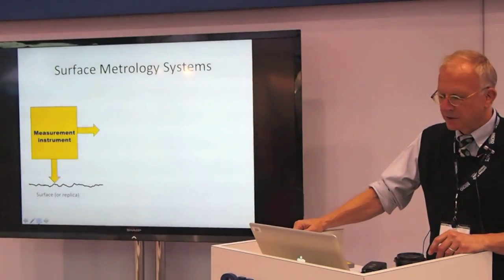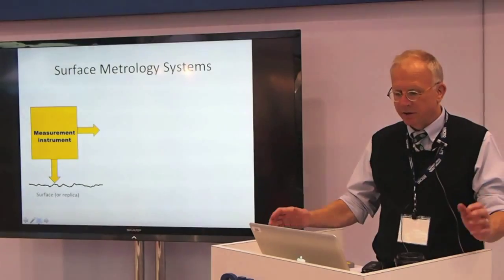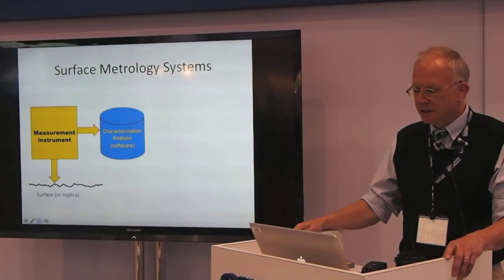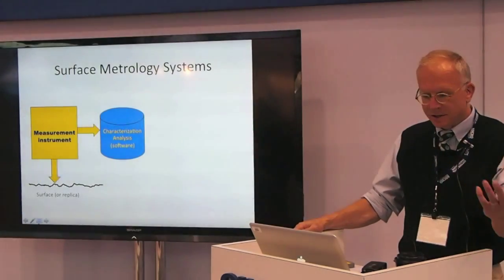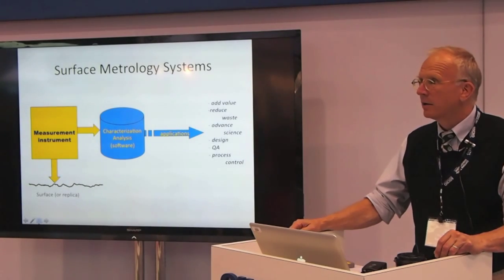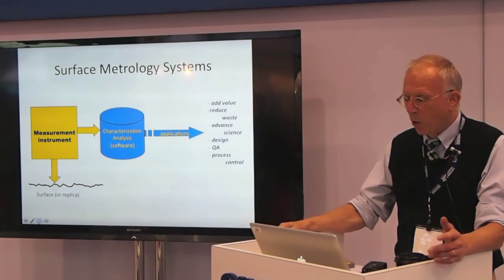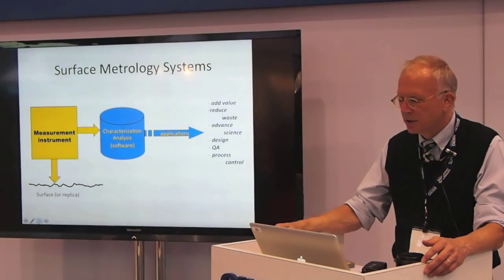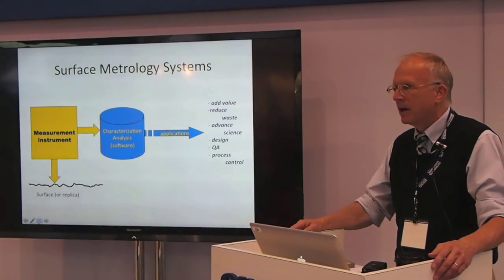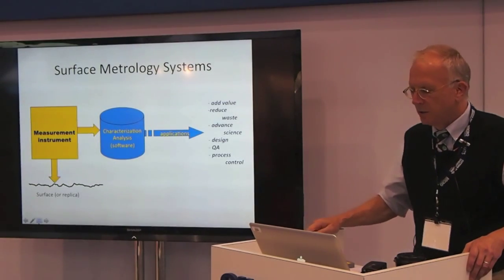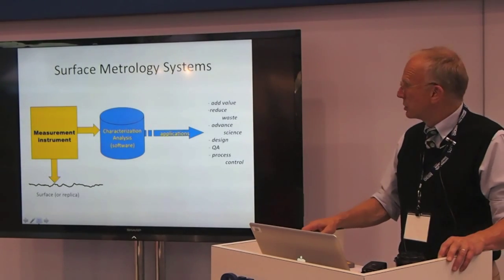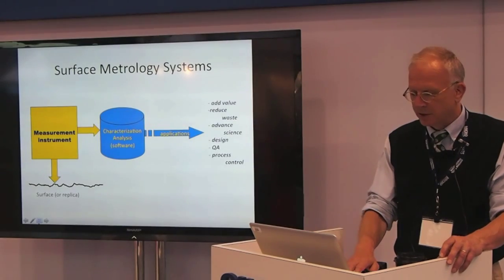It starts with a rough surface — sometimes it's a replica or some representation — and a measurement instrument. The system includes some sort of analysis, which will be the third part of the talk. One of the most important things in industry is how we can use this to add value and reduce waste, advancing the science to understand fundamentally what's happening — design, quality assurance, and process control.